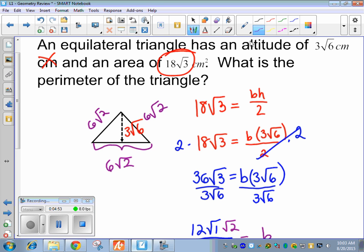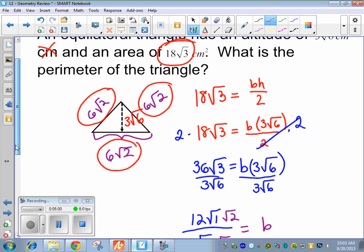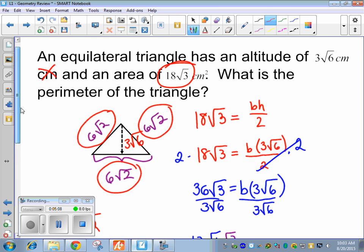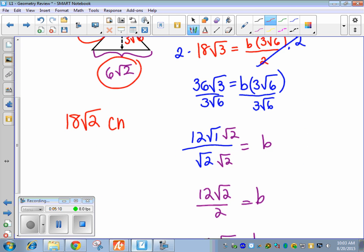So each of these are 6 root 2. So we're going to add those three together. When we add radicals, you actually don't add the root 2. It's kind of like a variable. So we're really just adding the 6, the 6, and the 6. And so that actually gives me 18 of the root 2s. And we're doing perimeter, so we need centimeters.